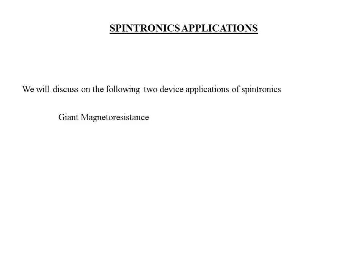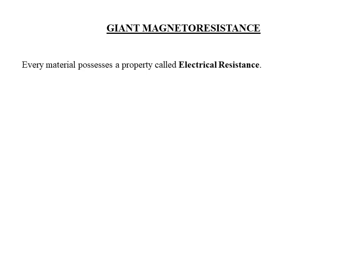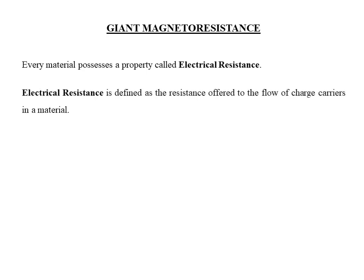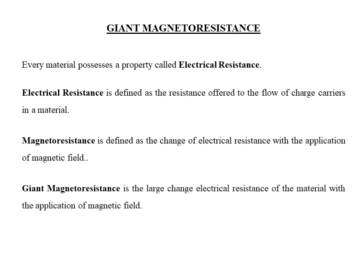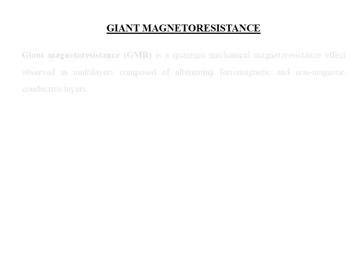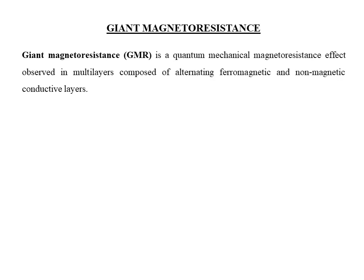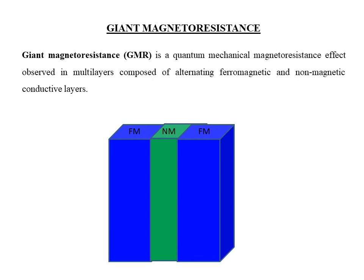Now let's look at some applications of spintronics: giant magnetoresistance and the spin valve. Any material has a property called electrical resistance — the resistance offered to the flow of charge carriers. Magnetoresistance is the change of electrical resistance with the application of a magnetic field. Giant magnetoresistance (GMR) is the large change in electrical resistance of a material with an applied magnetic field, observed in multilayers composed of alternating ferromagnetic and non-magnetic conductive layers. In the structure shown, the two blue layers on either side are ferromagnetic layers and the middle green layer is a non-magnetic layer.